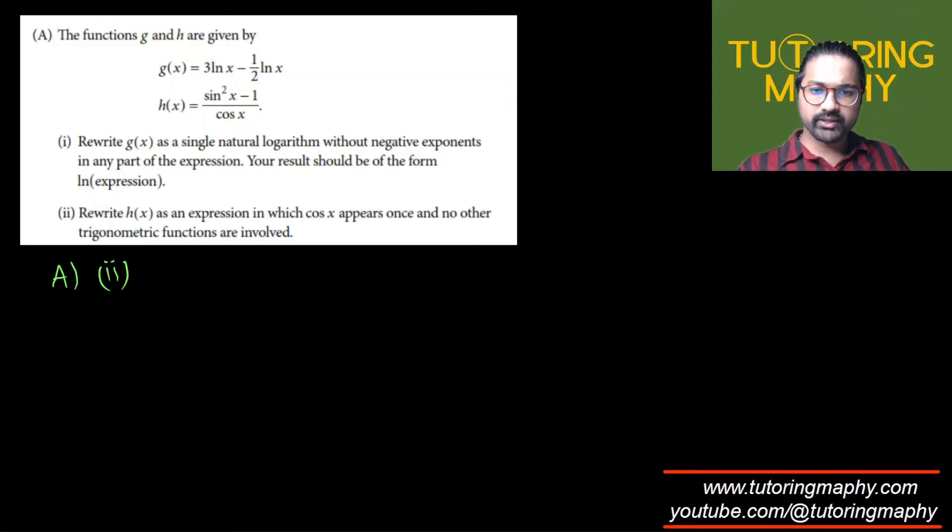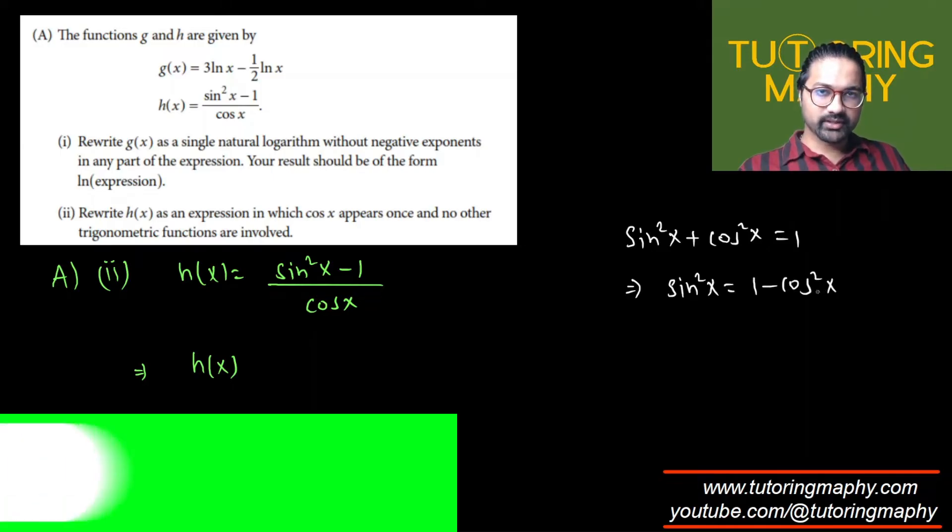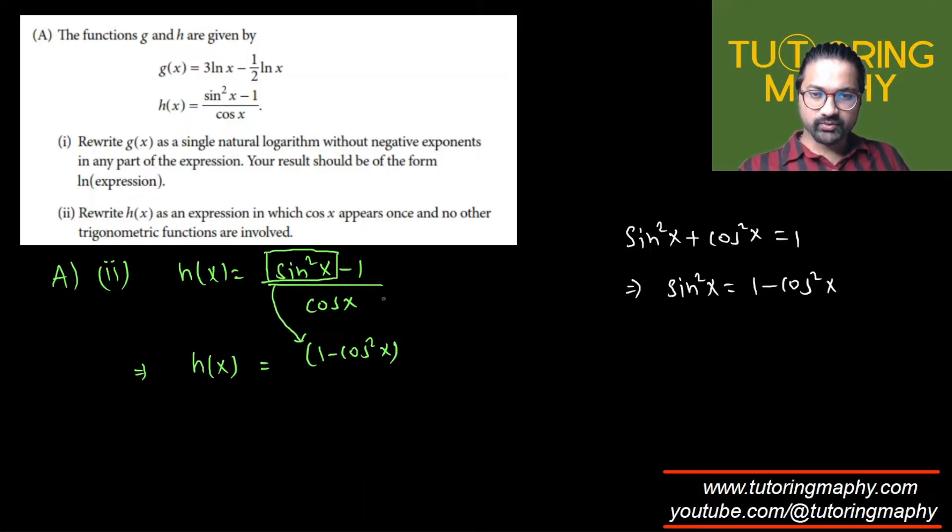First, I'm going to rewrite the expression h(x) = (sin²x - 1)/cos(x). Remember that trigonometric identity involving sine and cosine, because we need to eliminate sine. We know that sin²x + cos²x = 1 as per the Pythagorean identity. So we are looking to eliminate sine. We're just going to write sin²x as 1 - cos²x. I'm going to replace this sin²x with 1 - cos²x, and this minus 1 just remains as it is over cos(x).